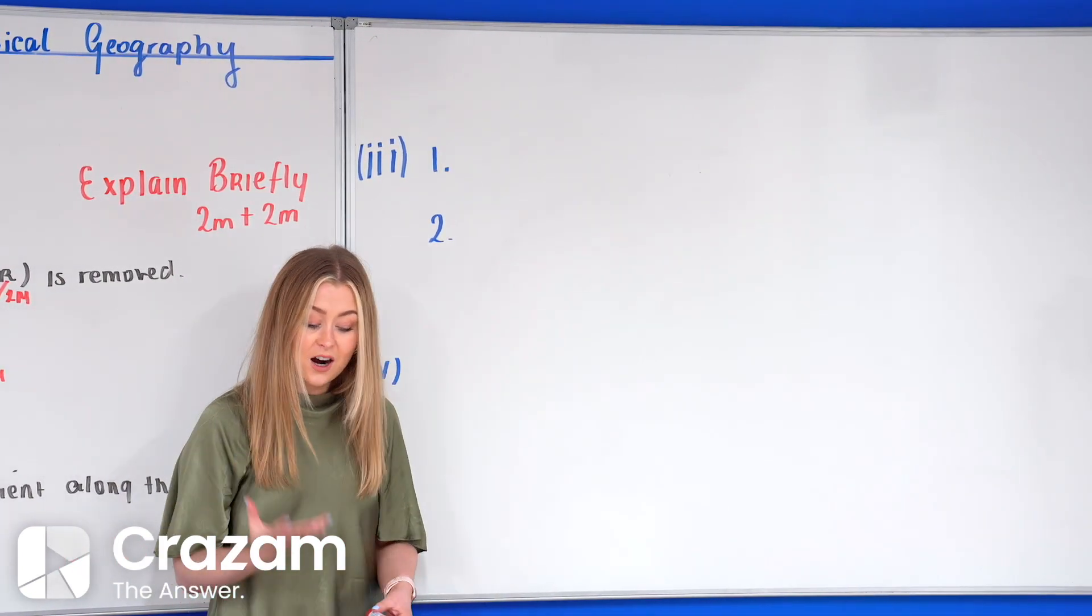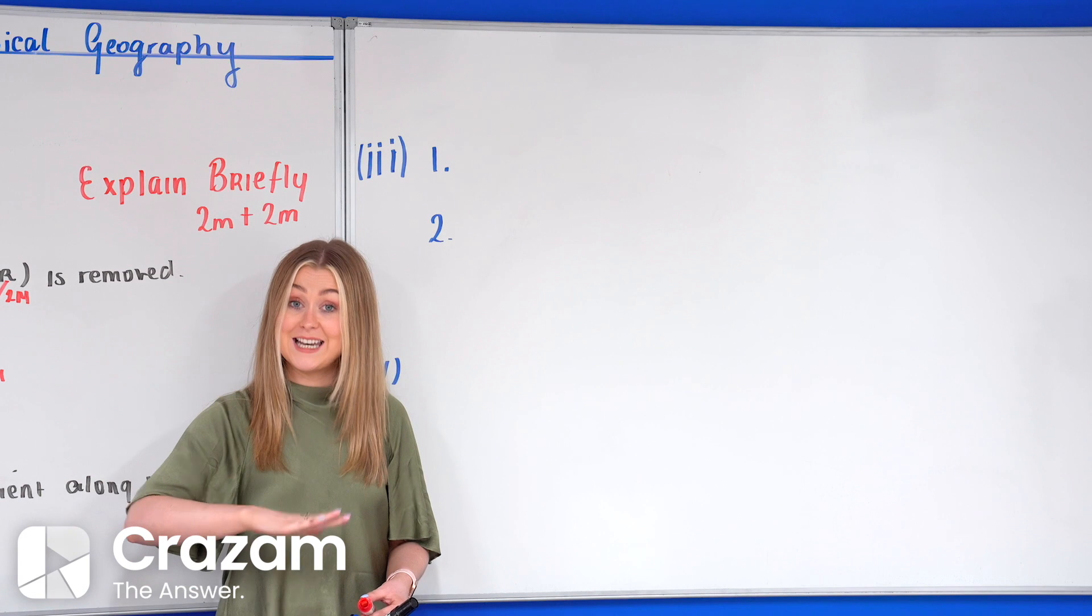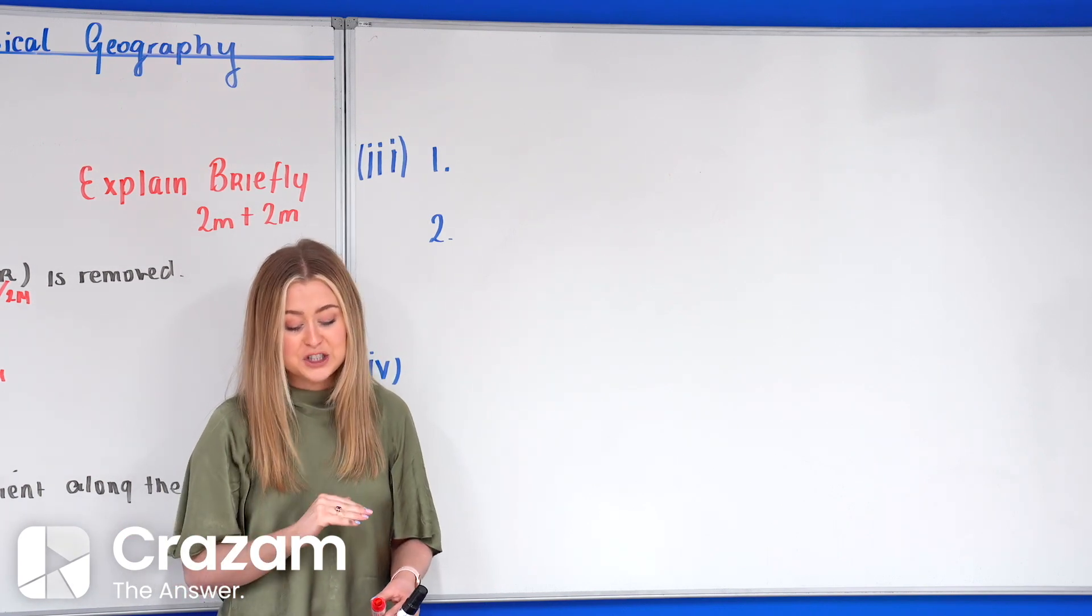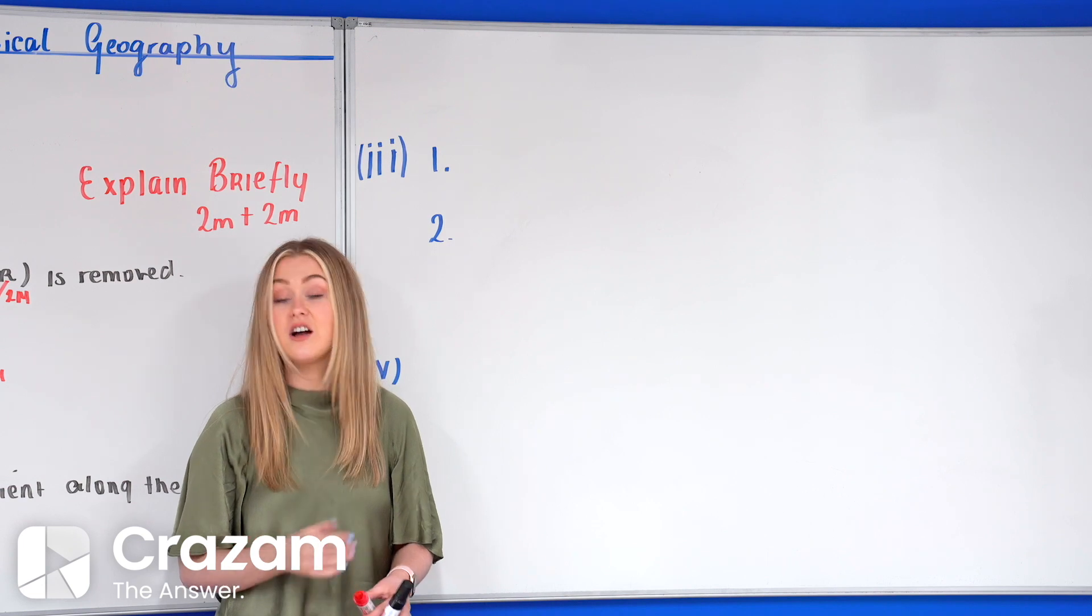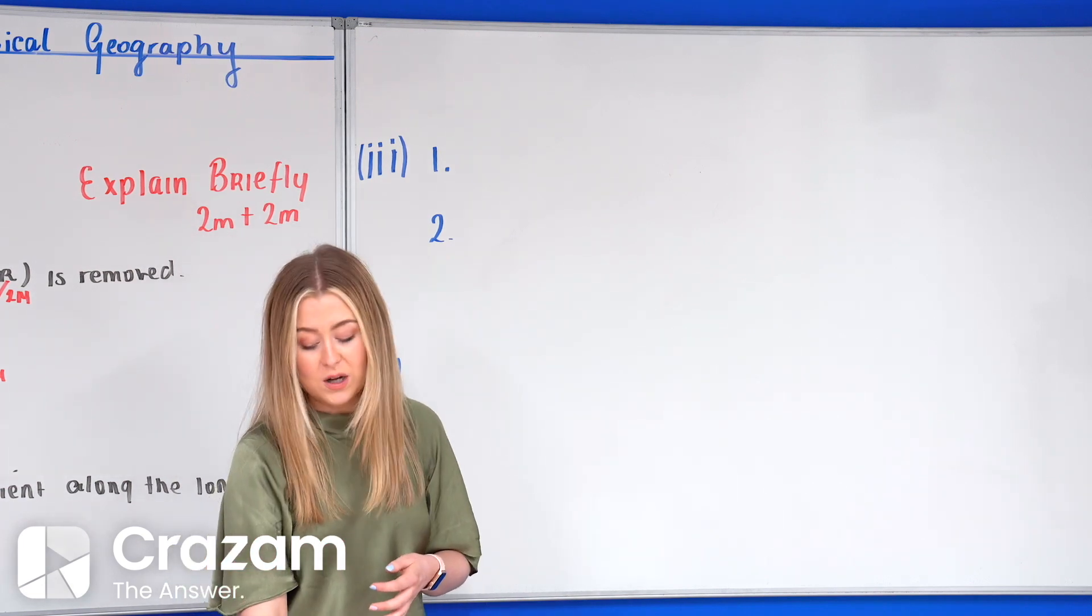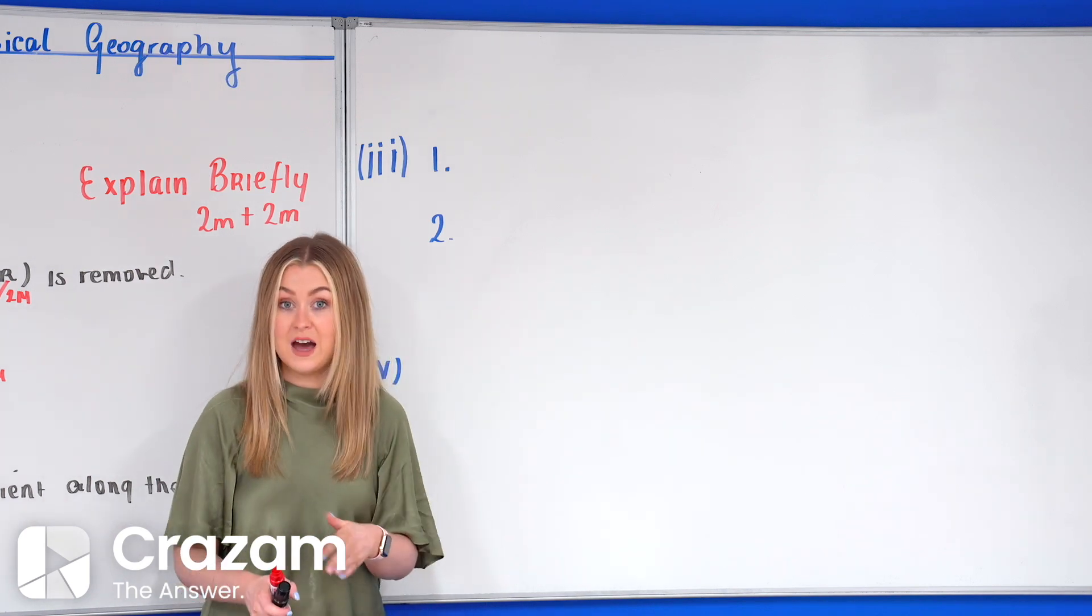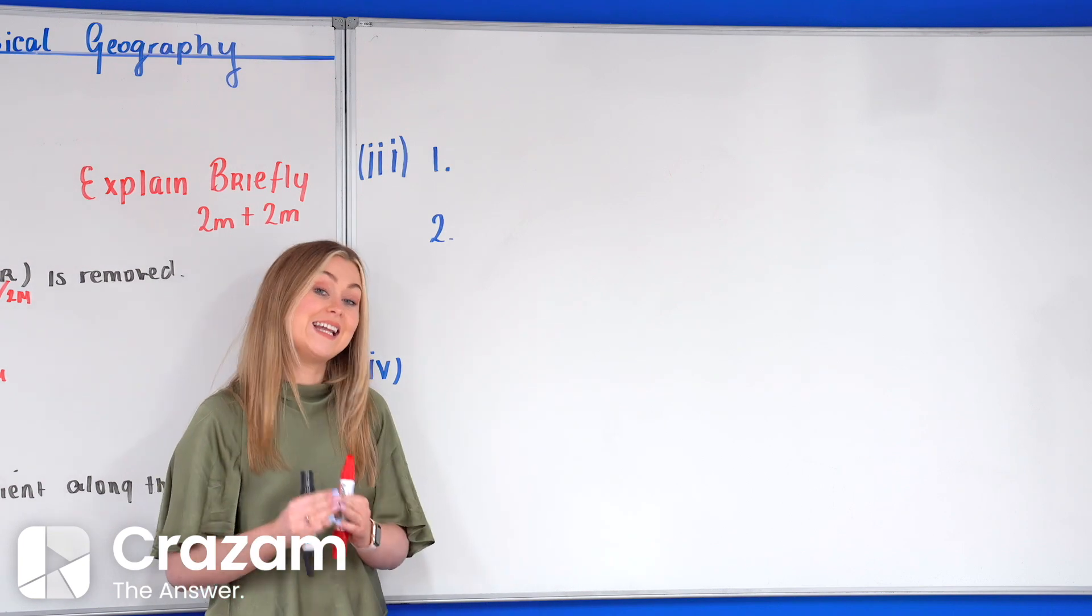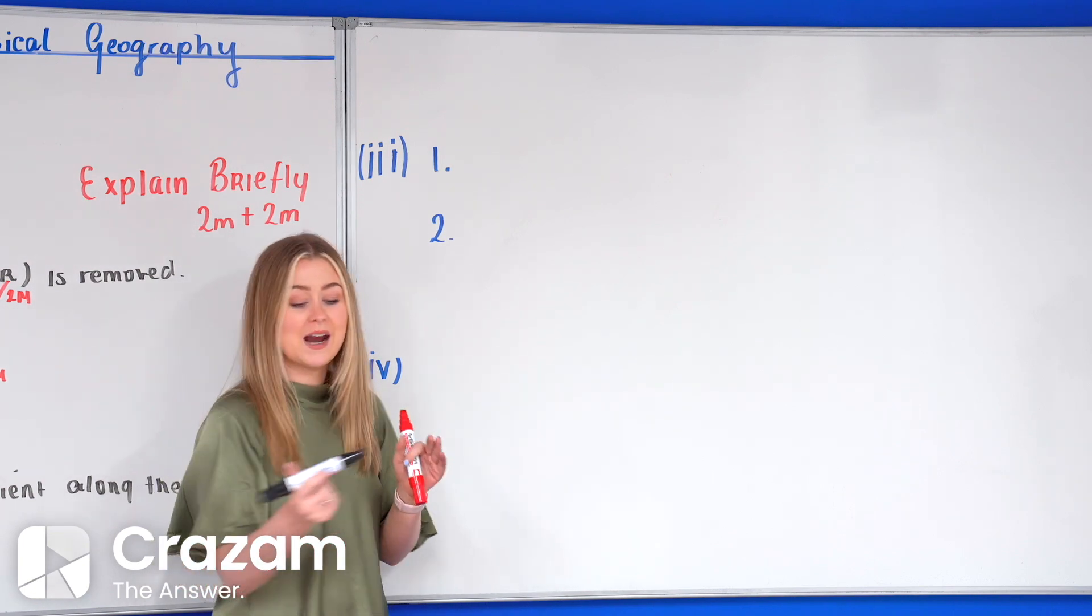So here our third part. Now we were asked to name, so here our questions are getting much shorter. Name two features of river rejuvenation not shown in the diagram. Now obviously the feature shown in the diagram was the nick point, we can't repeat that. So instead we're going to pick two different ones.